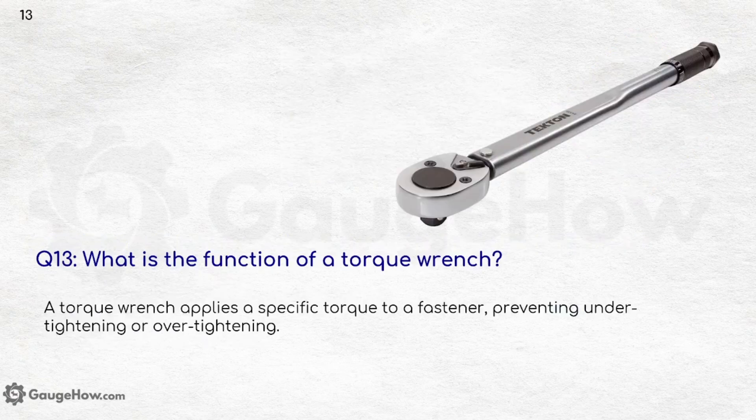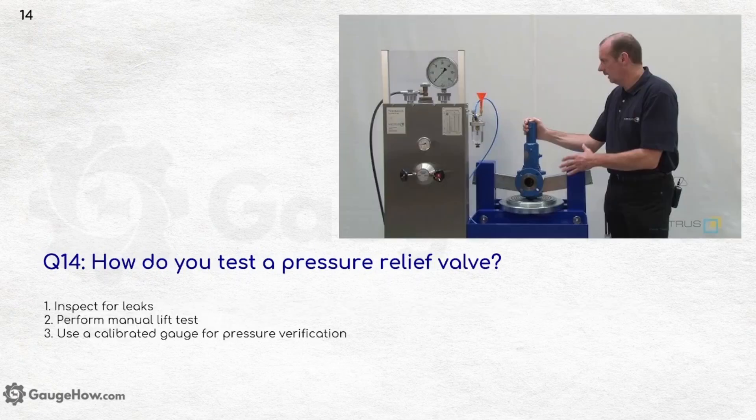What is the function of a torque wrench? A torque wrench applies a specific torque to a fastener, preventing under-tightening or over-tightening. How do you test a pressure relief valve? Inspect for leaks, perform a manual lift test, or use a calibrated gauge for pressure verification.